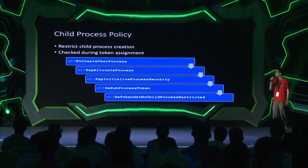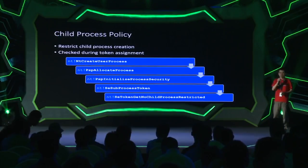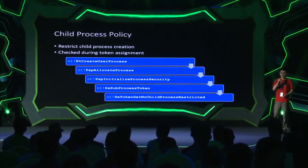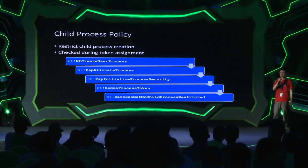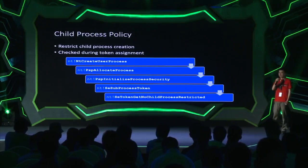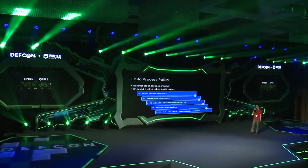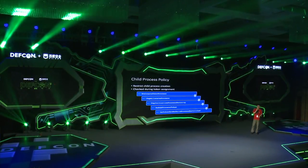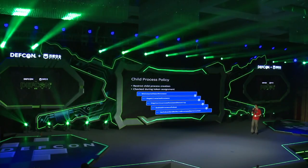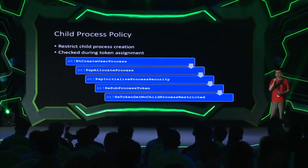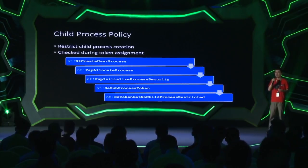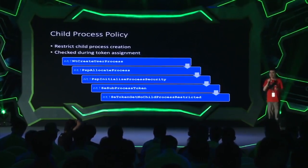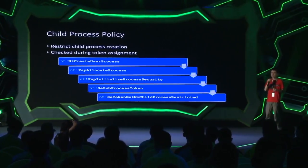At that time, Windows did not have a uniform way of recording mitigation policies for a certain process. So this particular policy is recorded in the token flag field of the kernel token object. When the process is created, it first needs to derive its token from its parent process. That is done in the security subsystem in the NTOS kernel. The security subsystem checks the token flag field to see if there's a child process restricted bit in that token flag field. If found, it denies the process creation.